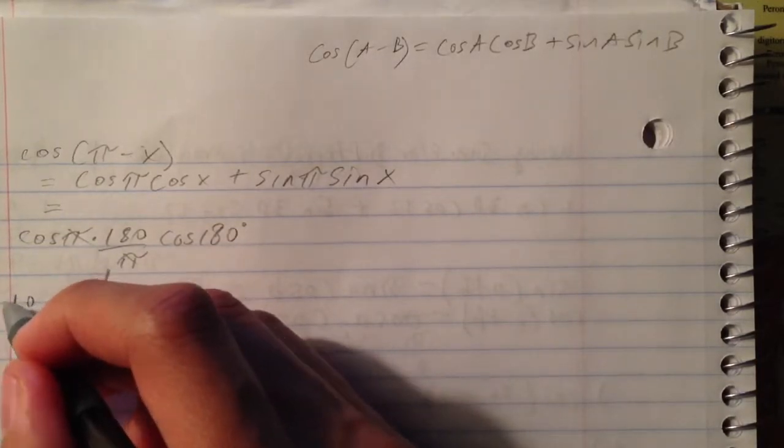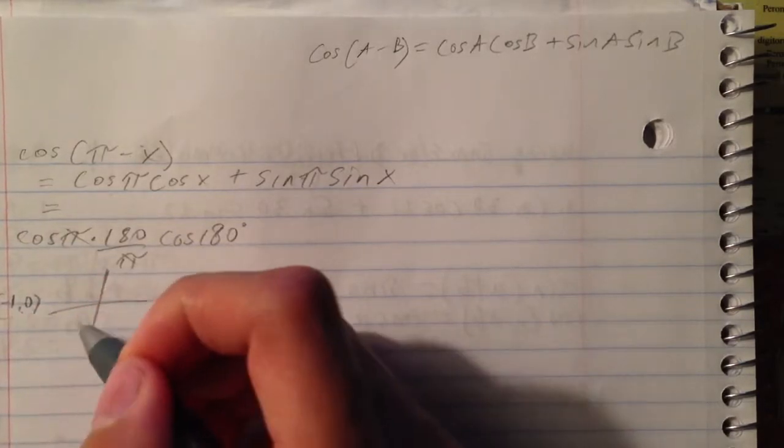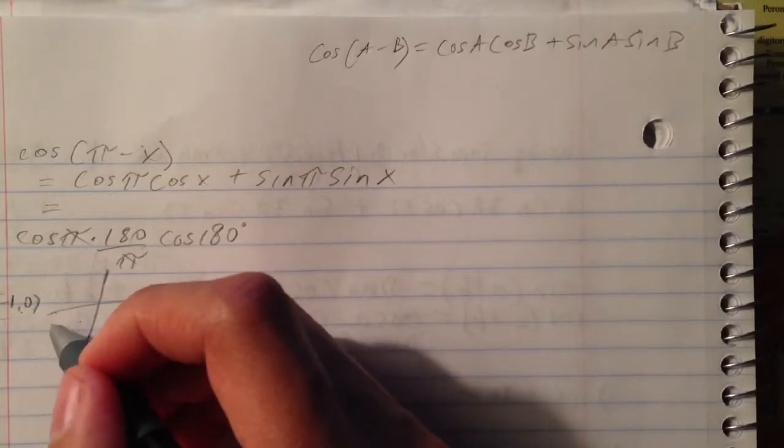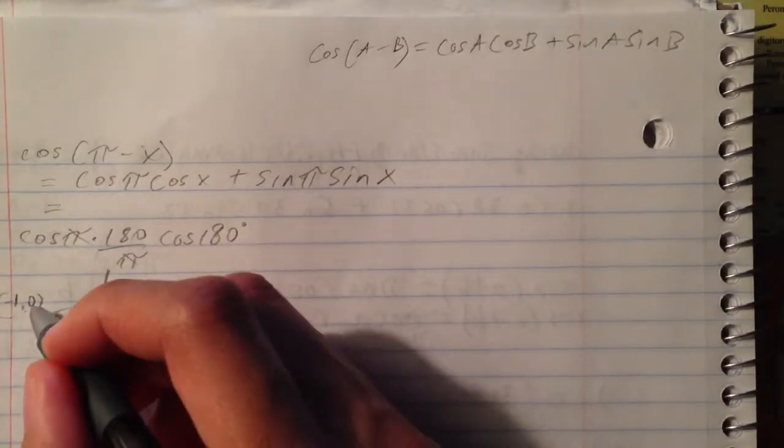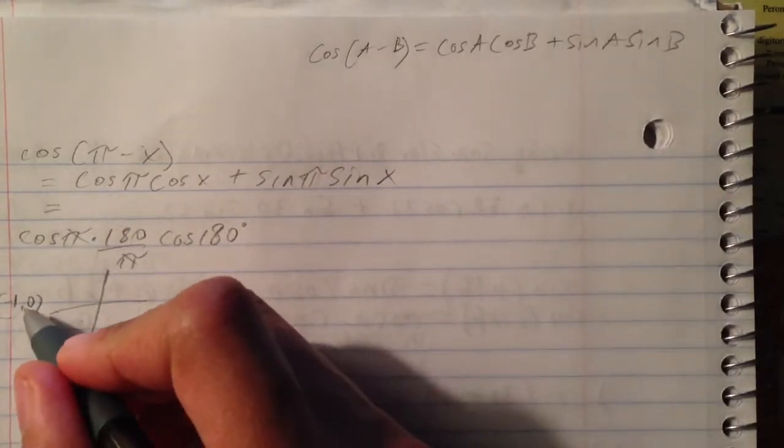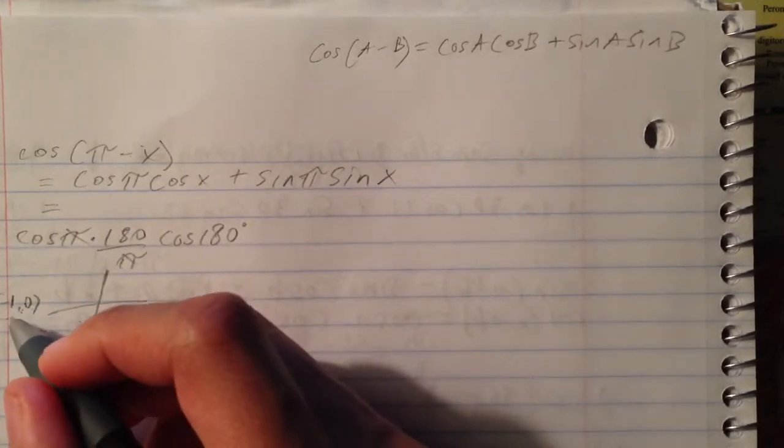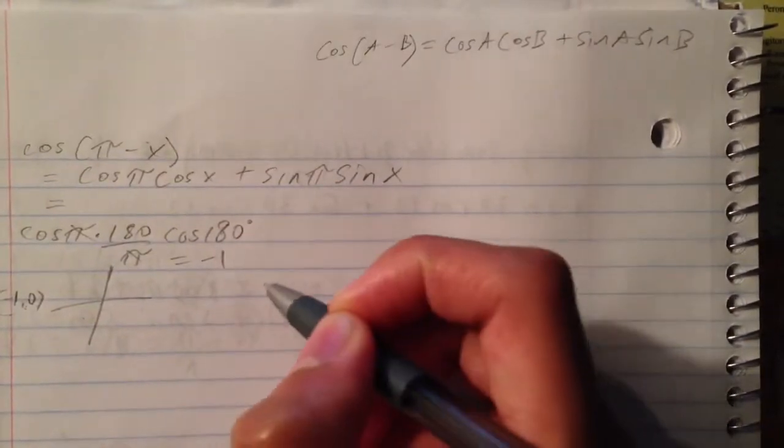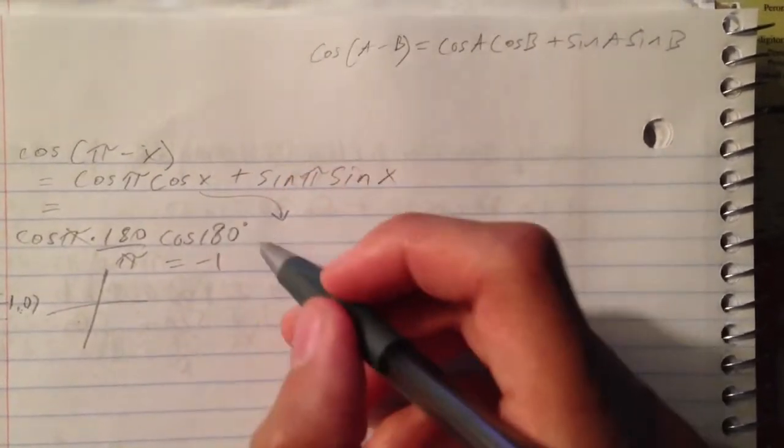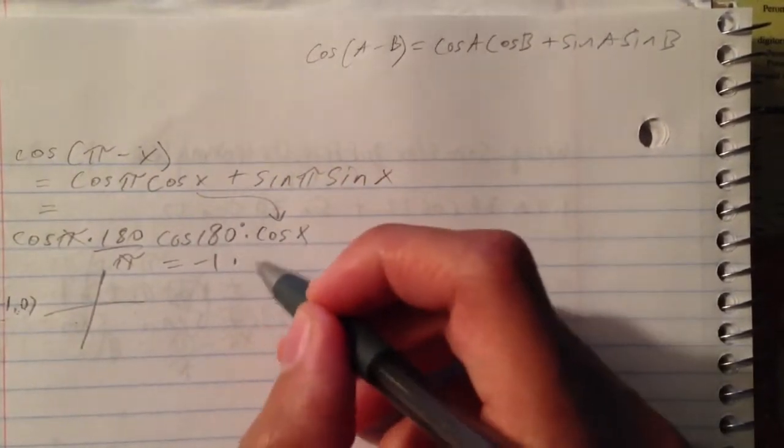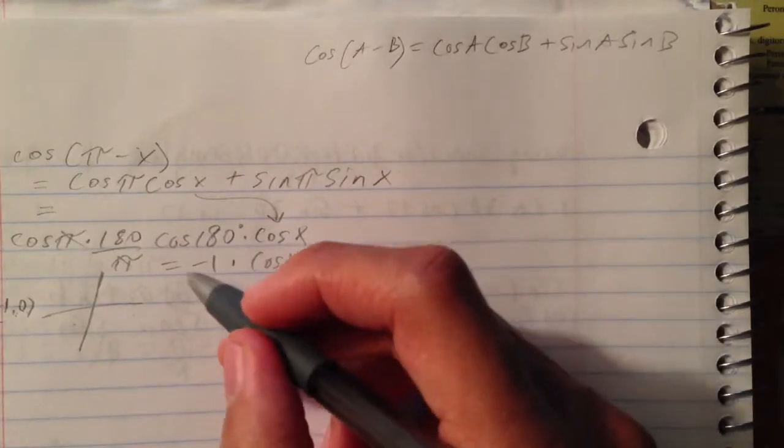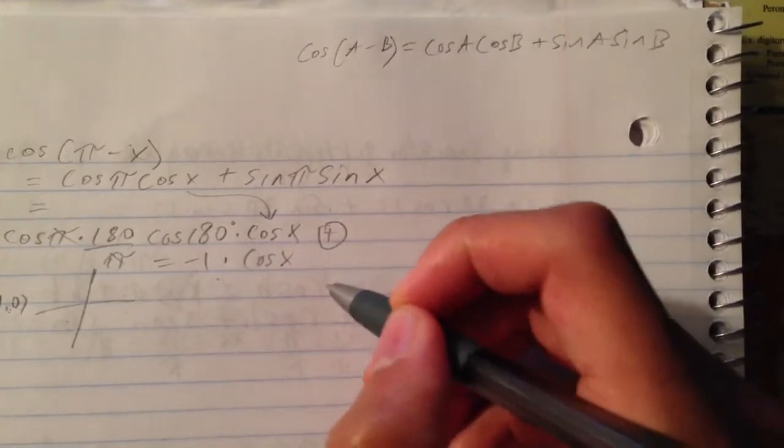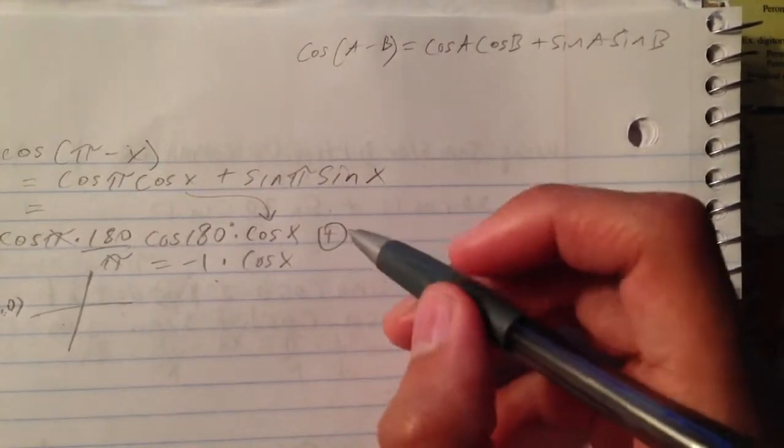And cosine is the x-axis. Sine is the y-axis. So since this is cosine right now we're talking about, that would be negative 1. So this equals negative 1. So we bring down this cosine x. So this becomes negative 1 times cosine x. Plus, make a circle just so that you don't forget that you're dealing with an addition problem.